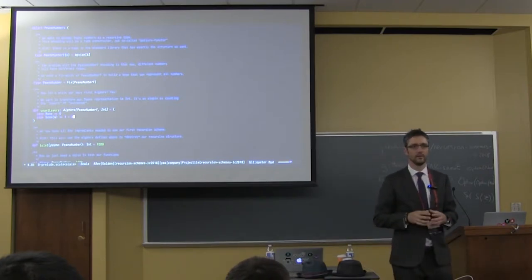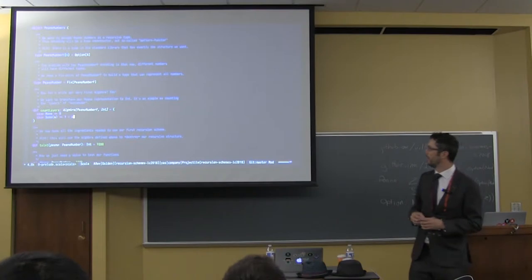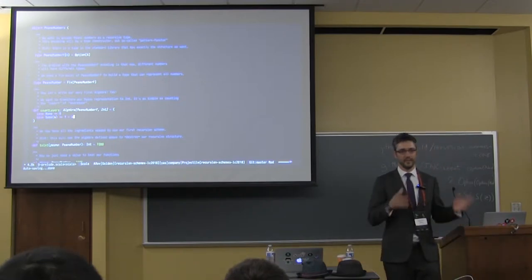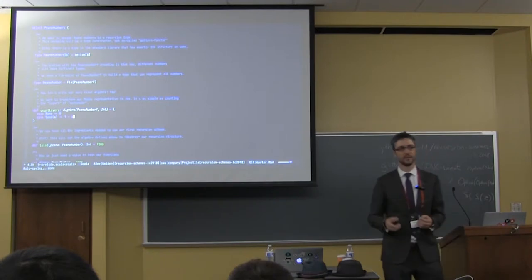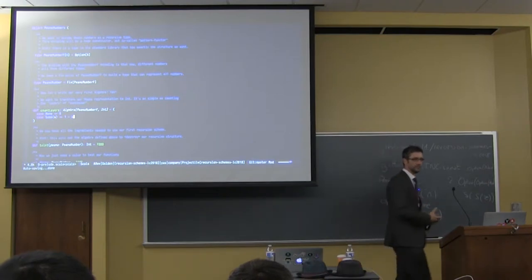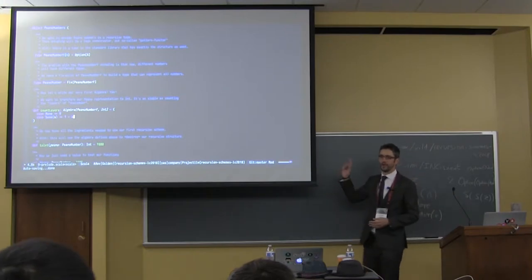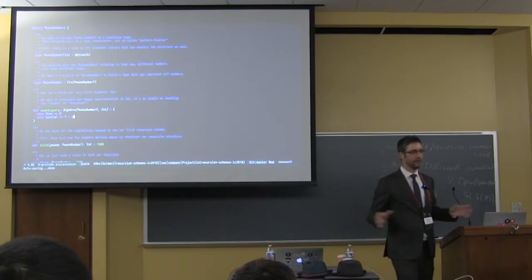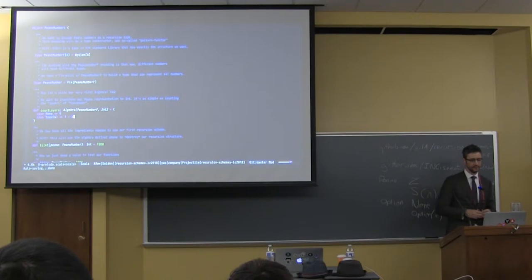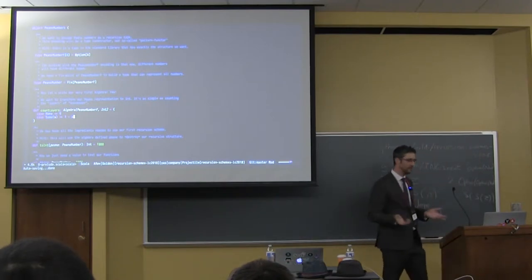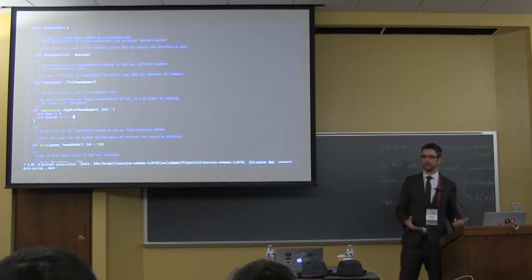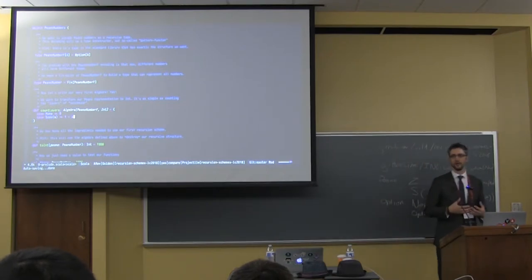So everything has been taken care of before. We just have to add one layer. And that's the power of recursion schemes. We don't care about how we traverse the whole thing. We just assume it has been done. And we just process the current layer. Why is it an int? Because we are writing an algebra from Peano number f to int. So we are writing a function of Peano number f of int to int. Or if you prefer from option of int to int. So we only care about one layer. And everything has been taken care of by the recursion schemes.